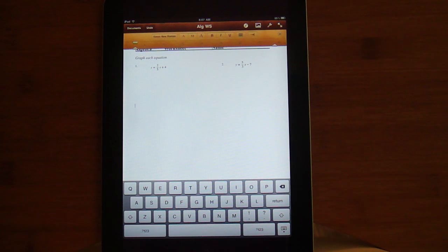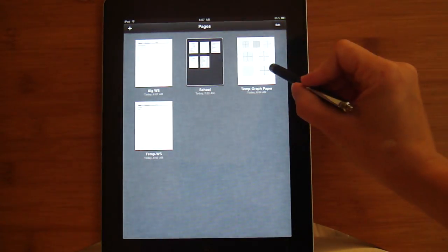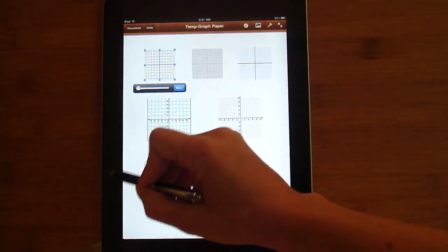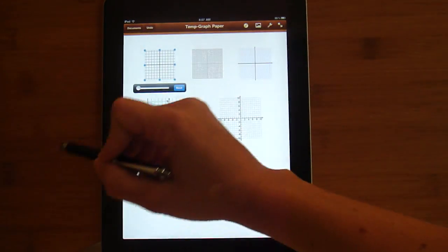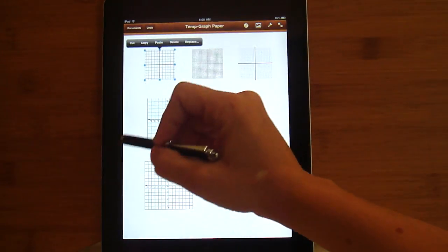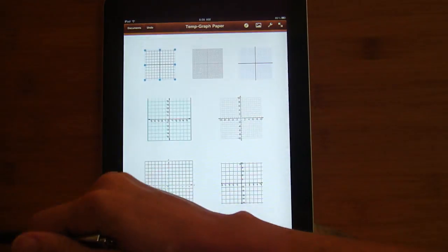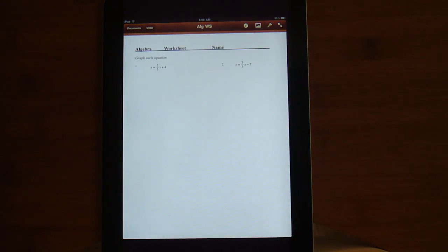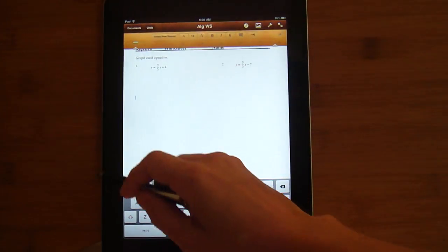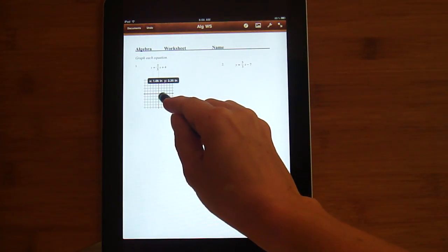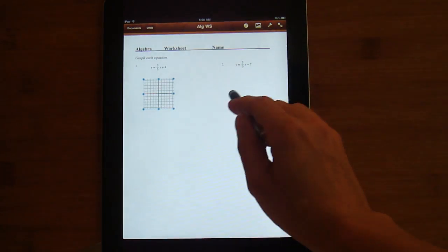Now I've got my page with different types of graph paper. I'm going to go to my graph paper template, pick one of those. I want to copy it. Don't double tap it. Just tap it once. I want to copy and paste.